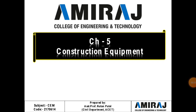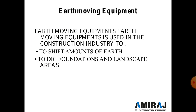Hello students, today we start a new topic — Chapter 5: Construction Equipments. In this topic we discuss different equipment used in construction industries, like cranes, JCBs, excavators, and earth moving equipment like dumpers, which are used in different activities to complete tasks on time or before time and save time.